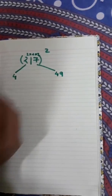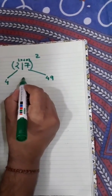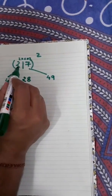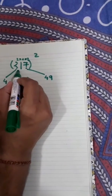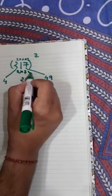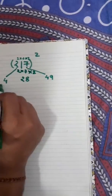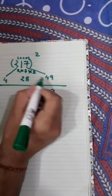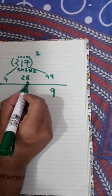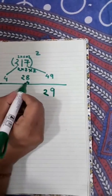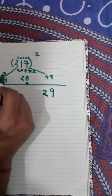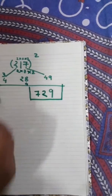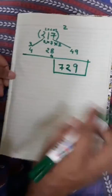In between, multiply 2 × 7 × 2 = 28. Write 9 in the units place from 49, carry forward 4. Then 28 + 4 = 32, write 2 and carry forward 3. Then 4 + 3 = 7. So 729 is the square of 27.